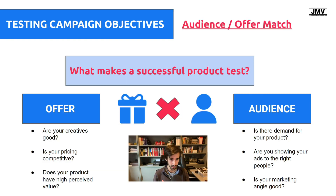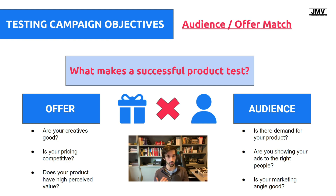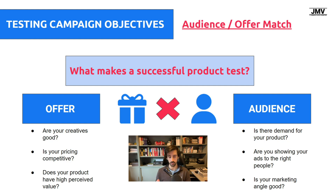First, we need to talk about the testing campaign. You guys have asked for a scaling strategy, but I didn't want to go into scaling without talking about testing first, because that wouldn't be very helpful. It would probably lead you to scale things that can't be scaled. So I decided to make a longer video and talk about testing first and then scaling. Testing is all about finding the right audience to match your offer. What makes a successful product test? The product is going to be successful if the offer is a good match for your audience — that means your pricing, your product, essentially what you're offering your customers. The price is one of the most important elements of your offer. For this video, we're already assuming that you have a product selected with a good offer and price in place.